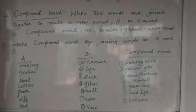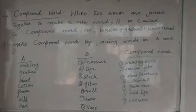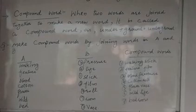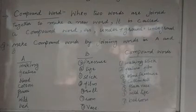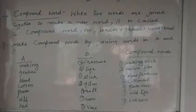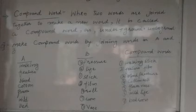तो पहले हम column A का पहला word देखते हैं — walking. Column B में हम देखते हैं कौन सा इसका suitable word है जो इसके सामने लगेगा ताकि हमें compound word मिल सके। तो walking के सामने हमने लगाया stick. Walking + stick — हमारा compound word बना: walking stick.